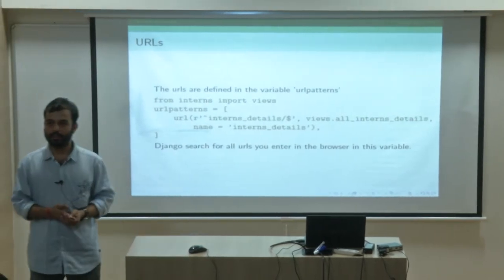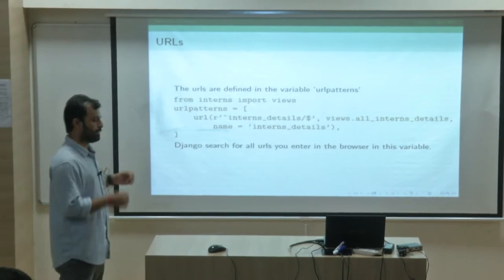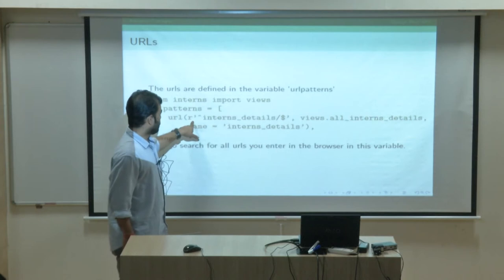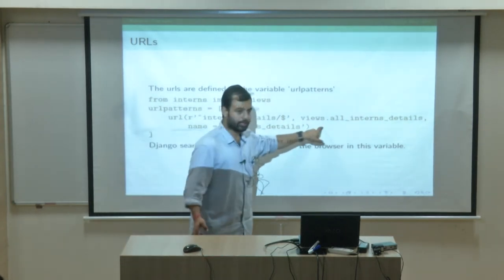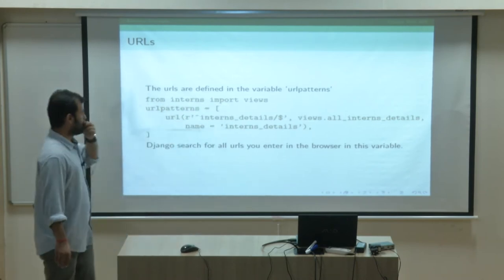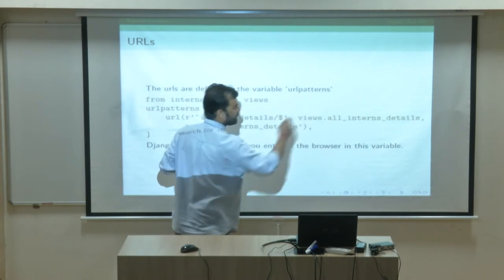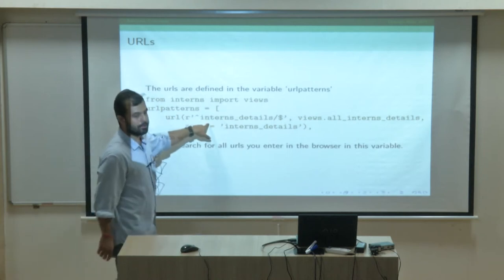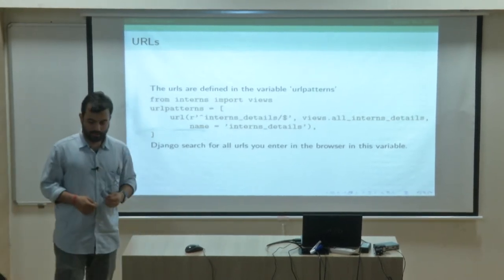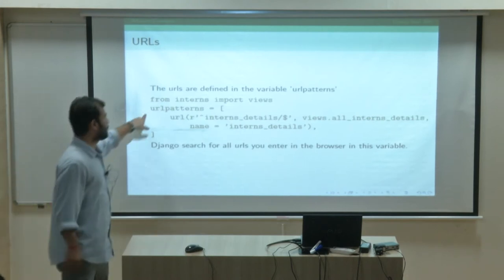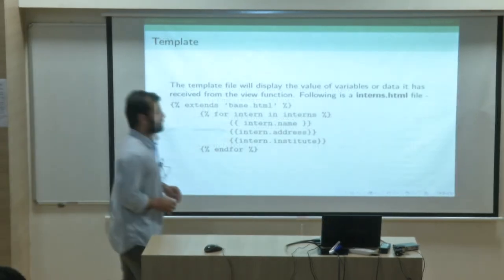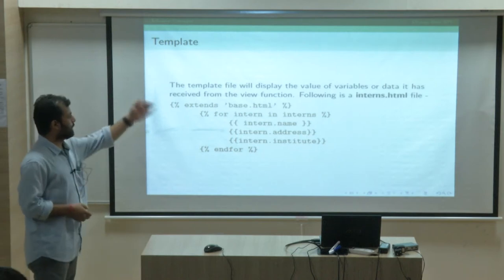This is the flow: first create your models, then define your views, then map them to a URL. After writing a class or function, you map it to a URL using a regular expression. It is a URL name, the view function you've written, and you give a name to the URL. You import your views — from interns, import the view file. The function name is 'all_intern_details', mapped to a particular URL. When you call this URL, it gives you all the interns in the interns.html file.